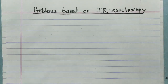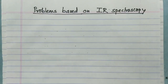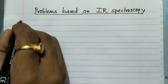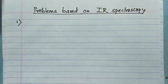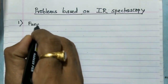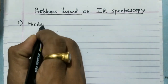Hello friends, today we are going to see the problems based on IR spectroscopy — what are the different types of problems asked on the basis of IR spectroscopy. The first type of problem is: calculate the fundamental modes of vibrations of the molecule.